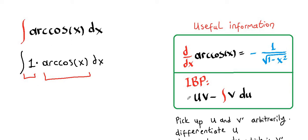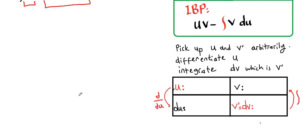One of them will be our u, the other one will be our v prime, which is dv. So we're going to pick u, which we can differentiate, and we're going to take dv, which we can integrate.